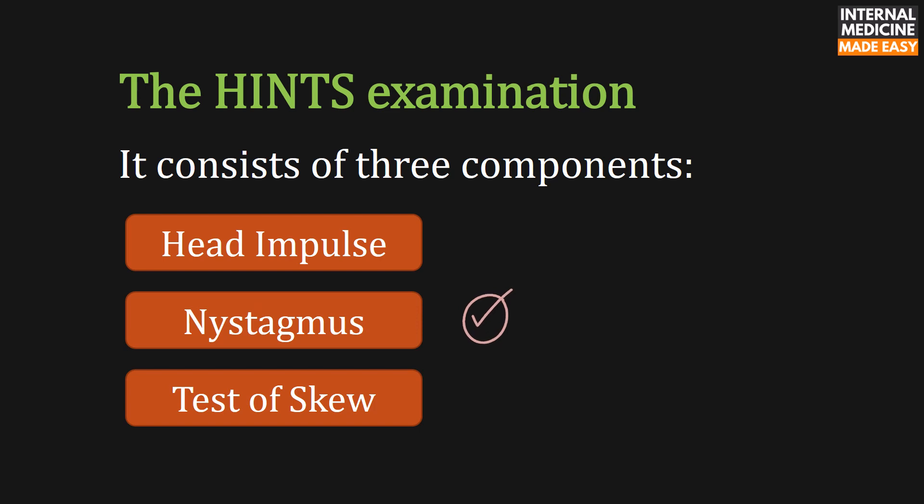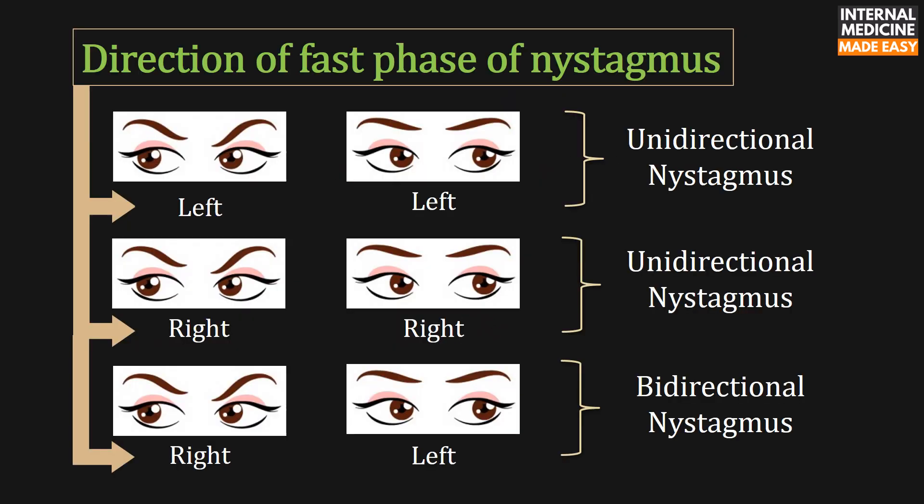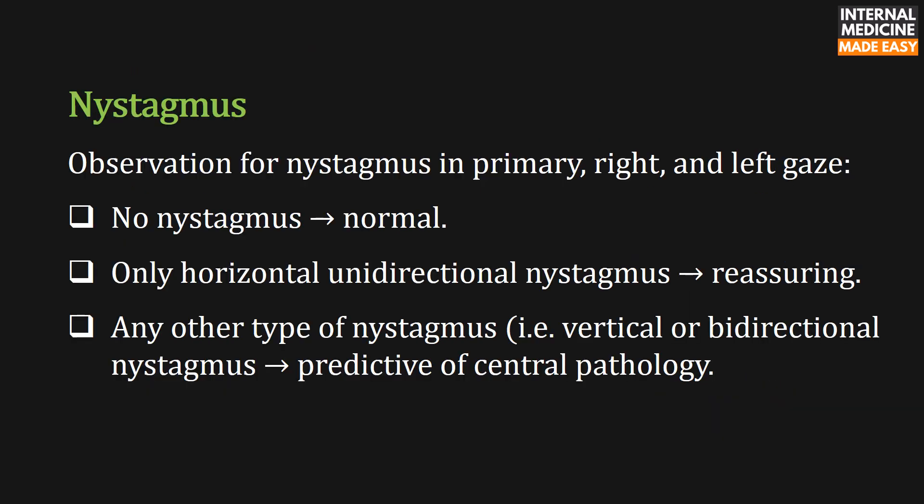Regarding nystagmus, according to the direction of the fast phase, there are two types: unidirectional and bidirectional. If the nystagmus is only to the left or only to the right, it is unidirectional. If the nystagmus is to the right upon right lateral gaze and to the left upon left lateral gaze, it is bidirectional. Observation is done in primary, right, and left gaze. If there is no nystagmus, it is normal. Only horizontal unidirectional nystagmus is reassuring, but vertical or bidirectional nystagmus is predictive of central pathology.